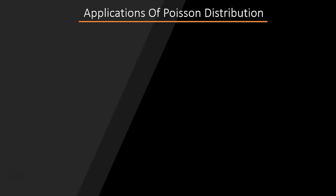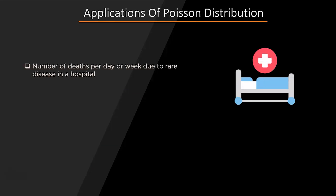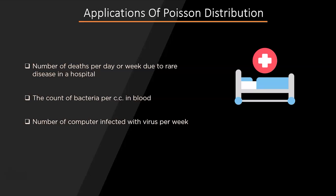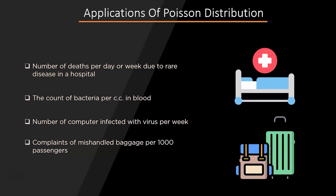Let's discuss some applications of Poisson distribution. If you want to calculate the number of deaths per day or week due to a rare disease in a hospital, you can use Poisson distribution. Similarly, the count of bacteria per cc in blood, the number of computers infected by a virus per week, or the number of mishandled baggage per 1000 passengers can also be modeled using Poisson distribution.